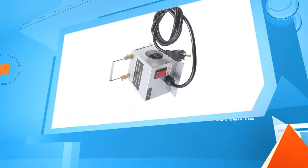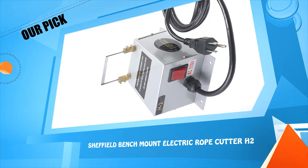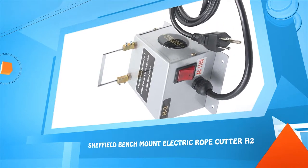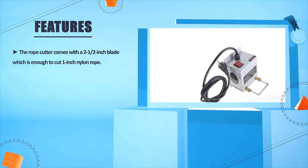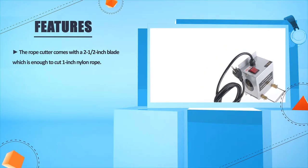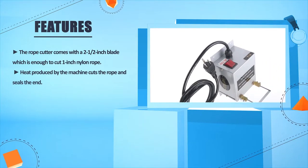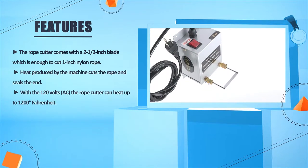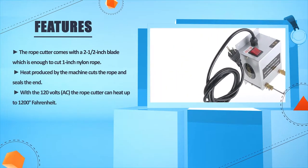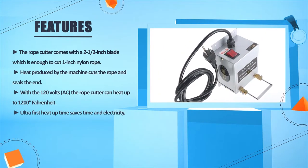Number 3: Sheffield Bench Mount Electric Rope Cutter, H2. The rope cutter comes with a 2 1/2 inches blade which is enough to cut 1 inch nylon rope. Heat produced by the machine cuts the rope and seals the end. With the 120 volts AC the rope cutter can heat up to 1200 degrees Fahrenheit. Ultra fast heat up time saves time and electricity.